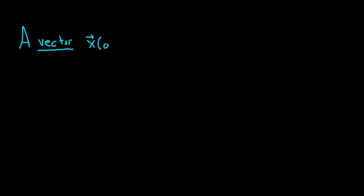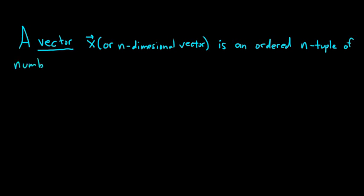sometimes called an n-dimensional vector, or simply an n-vector, is an ordered n-tuple of numbers. For our purposes, the numbers will be real numbers. So the entries in the vector are real numbers.